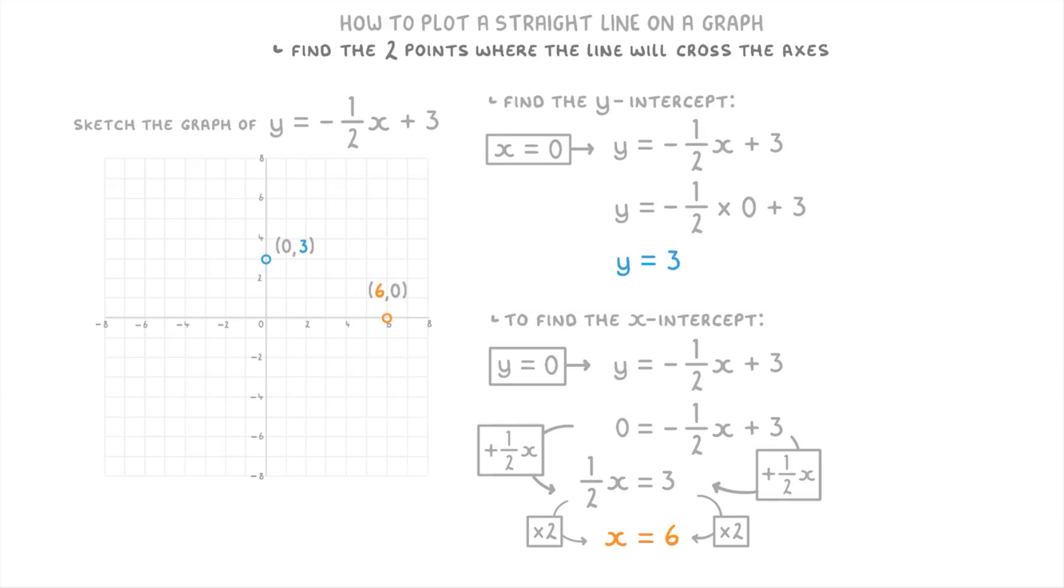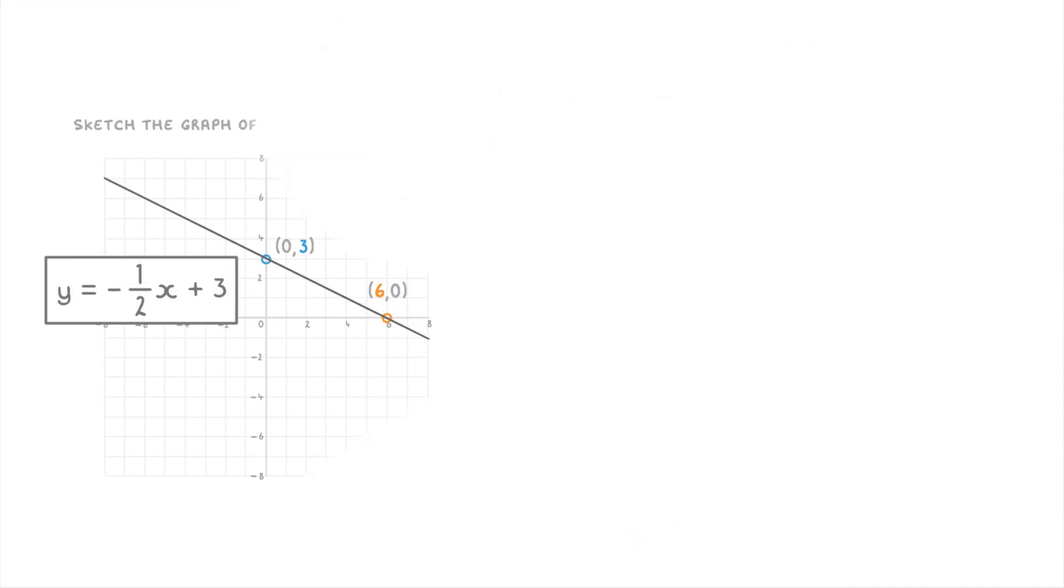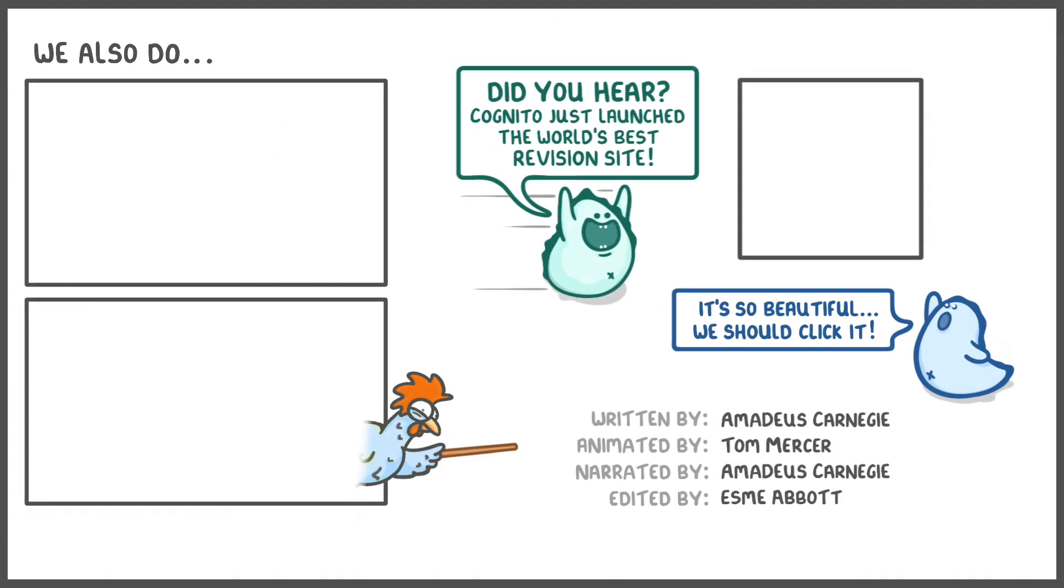And now that you've got the x and y intercepts, all you have to do is draw a line that extends through both of the points and label it, and we're all done. Anyway, that's everything, so hope that it all made sense and cheers for watching.